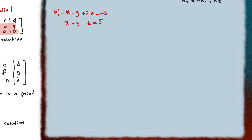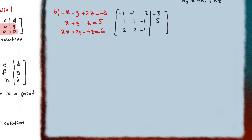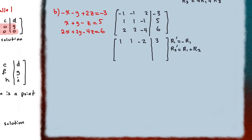Next, we try a different example with three different planes, again starting with the augmented matrix. We write all coefficients and constants, then convert to echelon form. The first row has negative values, so we multiply row one by negative one to make them positive. To reduce row two, we add row one to row two: the x and y coefficients cancel to zero, the z coefficient gives one, and the constant gives two.